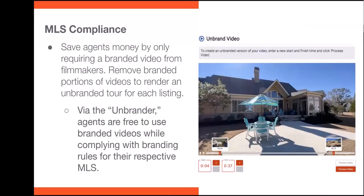The unbrander is very descriptive, because essentially what the tool enables you to do is: if you get a branded video from your production team, you don't have to ask for both a branded and an unbranded version. You can get a branded version, and as long as the branding is at the beginning and end of the video, you can select a new start time by dragging and dropping and a new end time wherever you'd like, then process that video. Now you have an MLS-compliant version of a video that was otherwise branded.